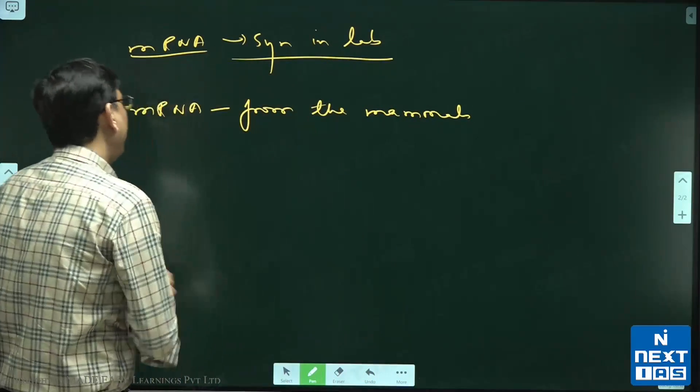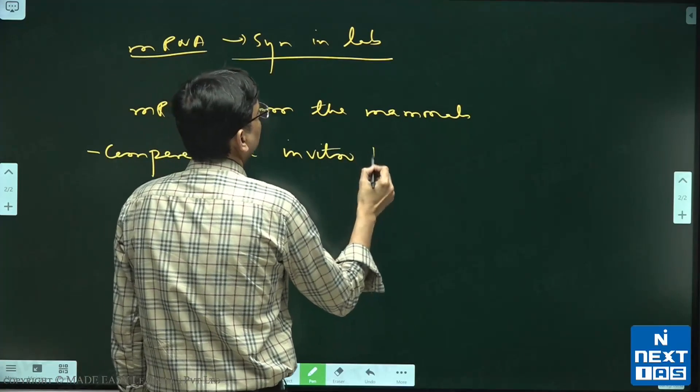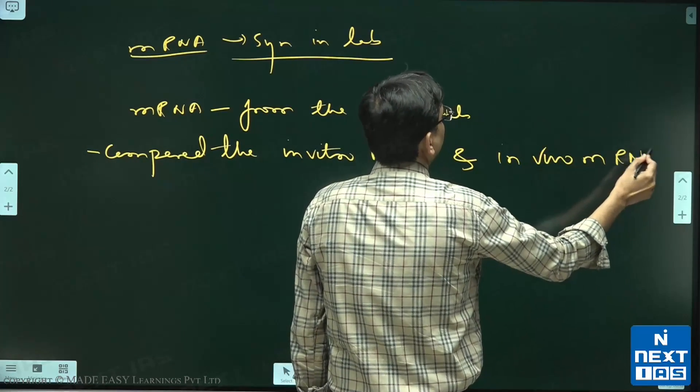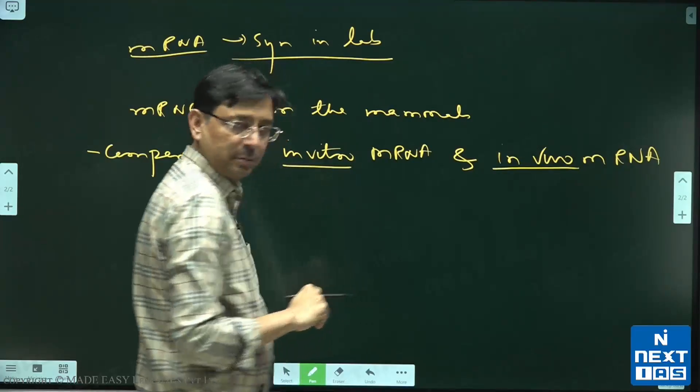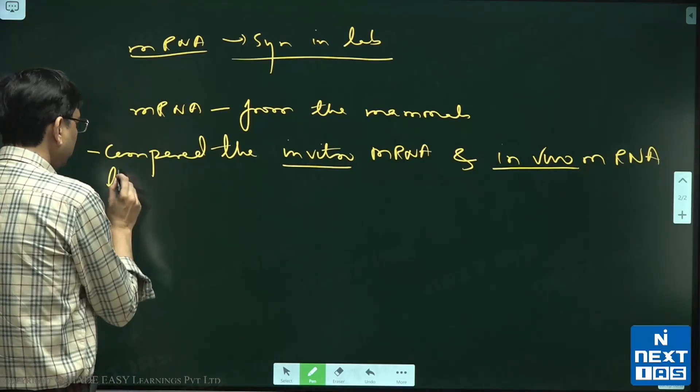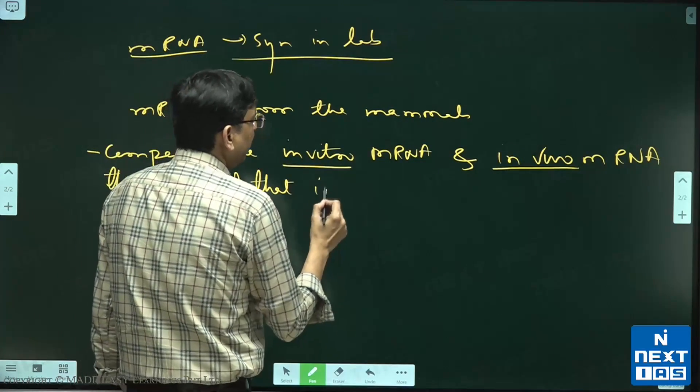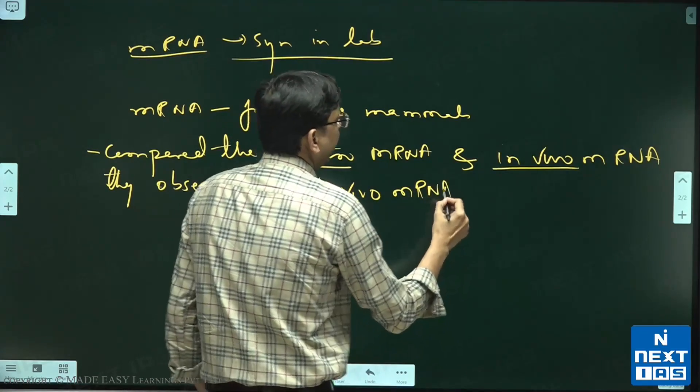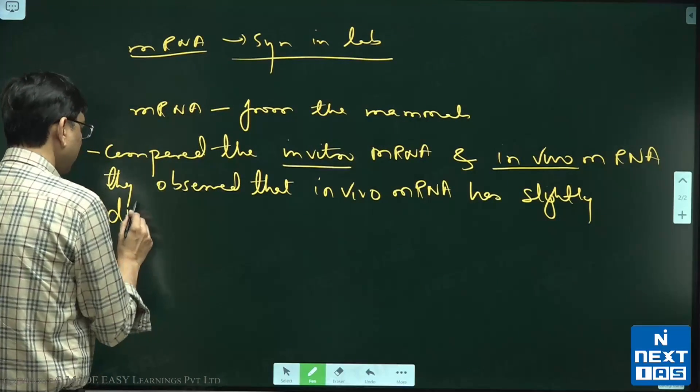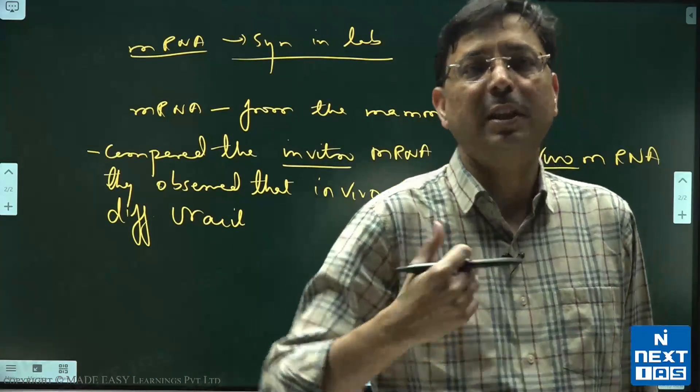Then they compared the in vitro RNA and in vivo RNA. In vivo means nature, in vitro means lab. And what they found? They observed that in vivo mRNA has slightly different uracil. You know RNA has uracil.